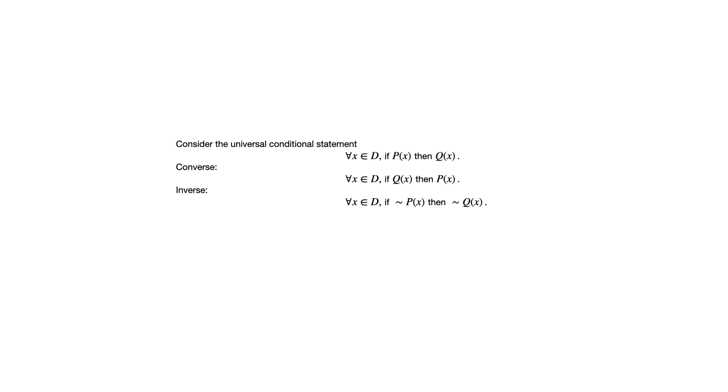The original is: for all x in d, if p of x, then q of x. The converse is: for all x in d, if q of x, then p of x. The inverse is: for all x in d, if not p of x, then not q of x. And the contrapositive is: for all x in d, if not q of x, then not p of x. These all work the same way as converse, inverse, and contrapositive in chapter 2.